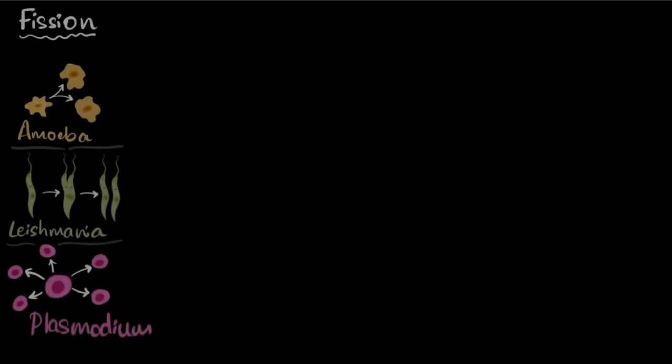Let's explore asexual reproduction in simple organisms. The first one is fission. Fission refers to cell division. You may ask, how is cell division reproduction? Well, if you have unicellular organisms, then their cell division itself gives you multiple cells and that itself gives you reproduction.